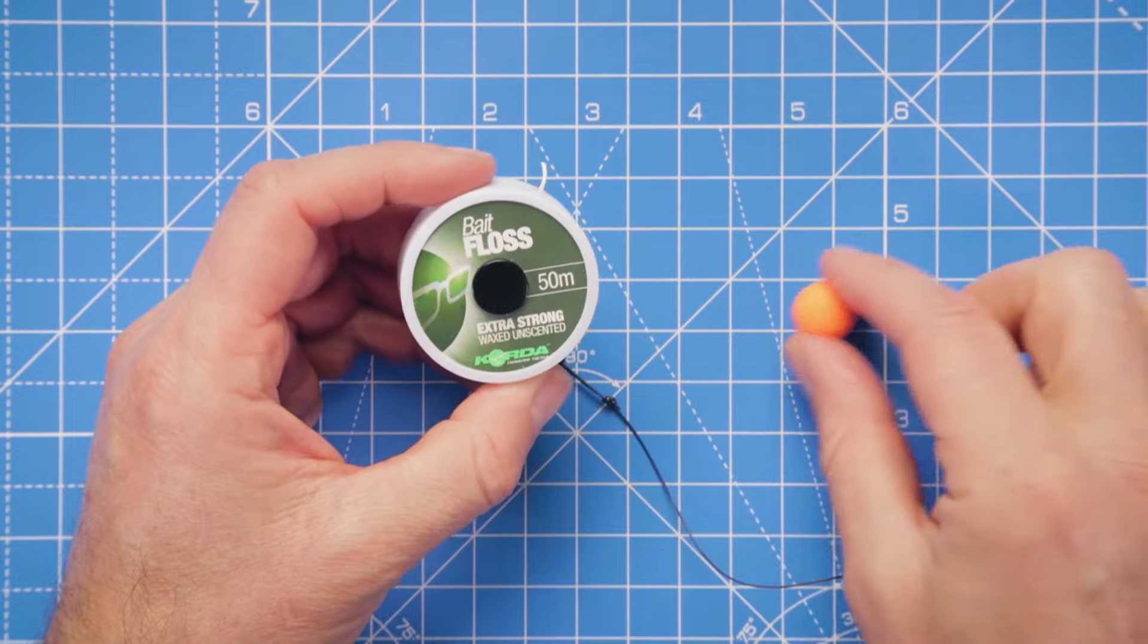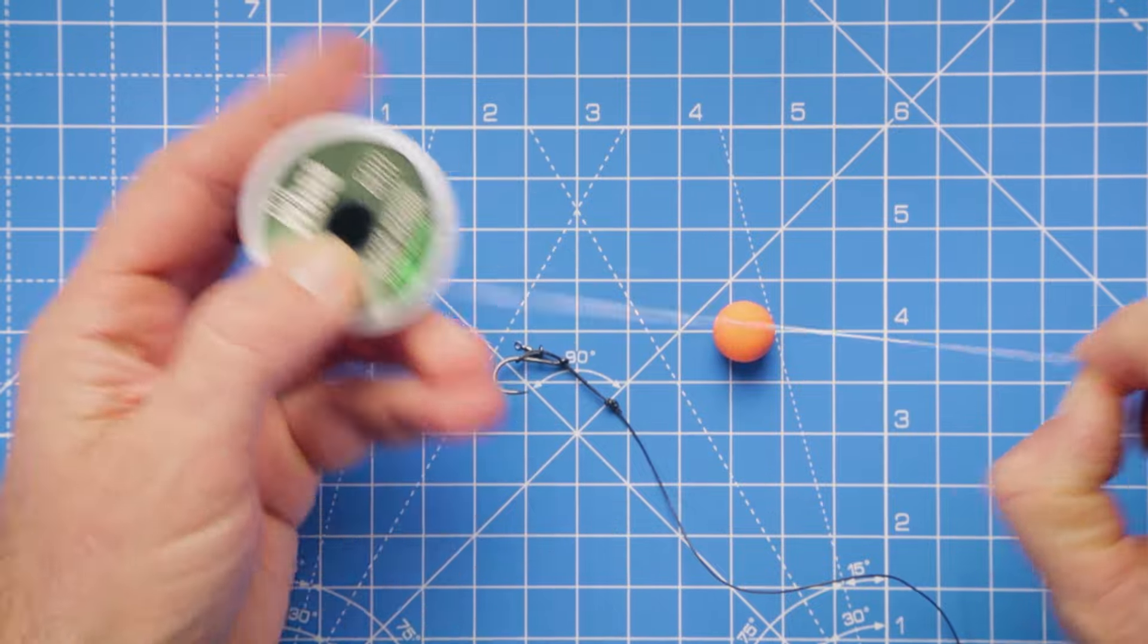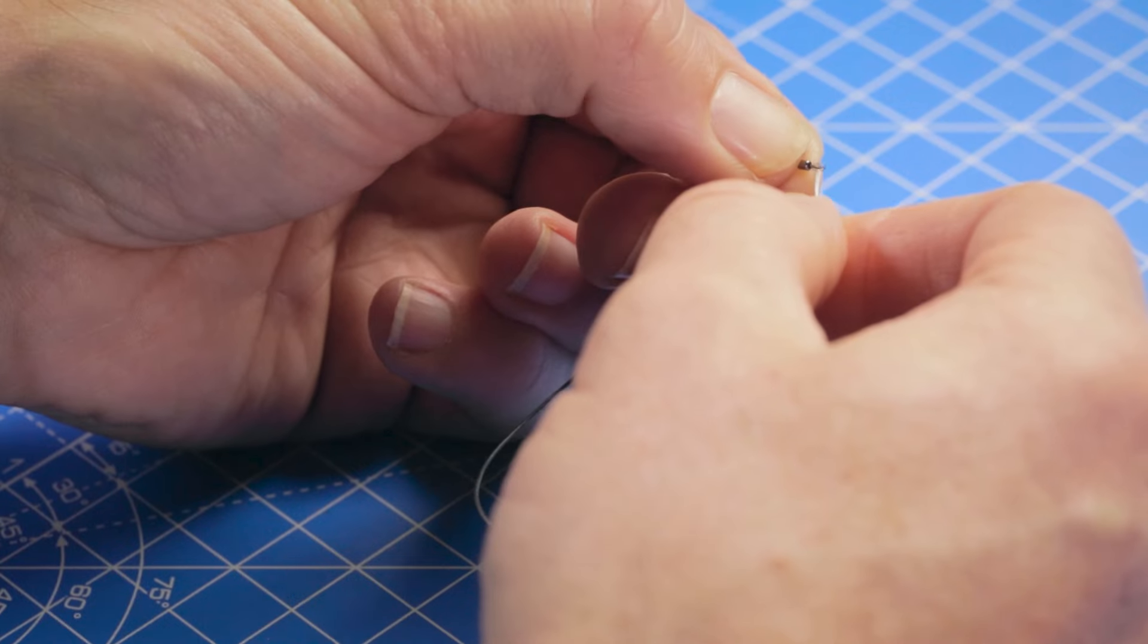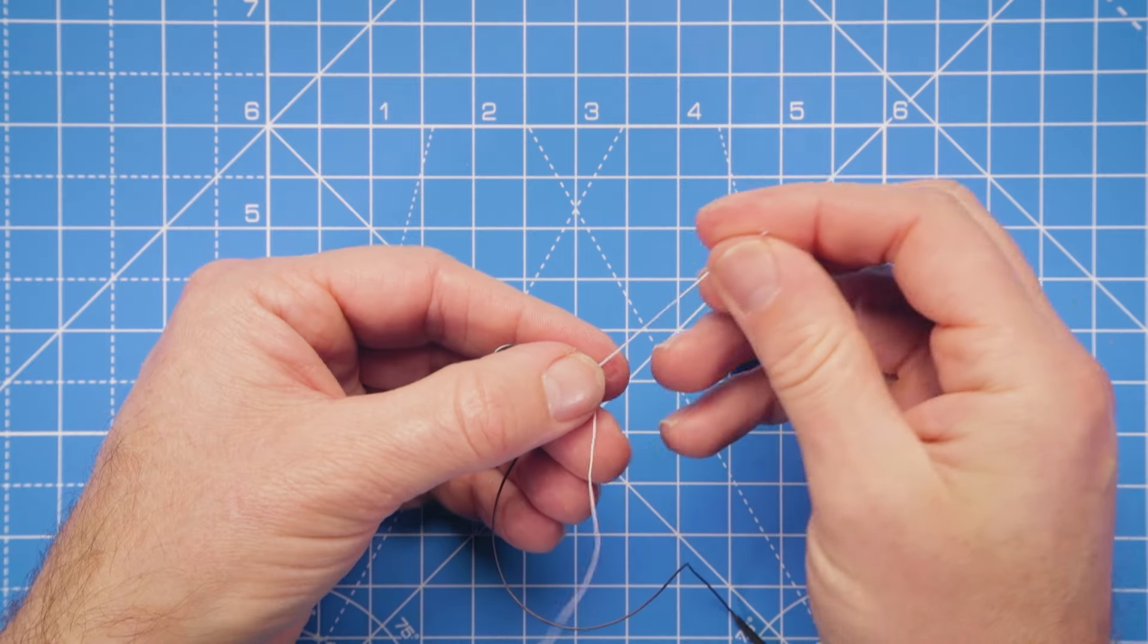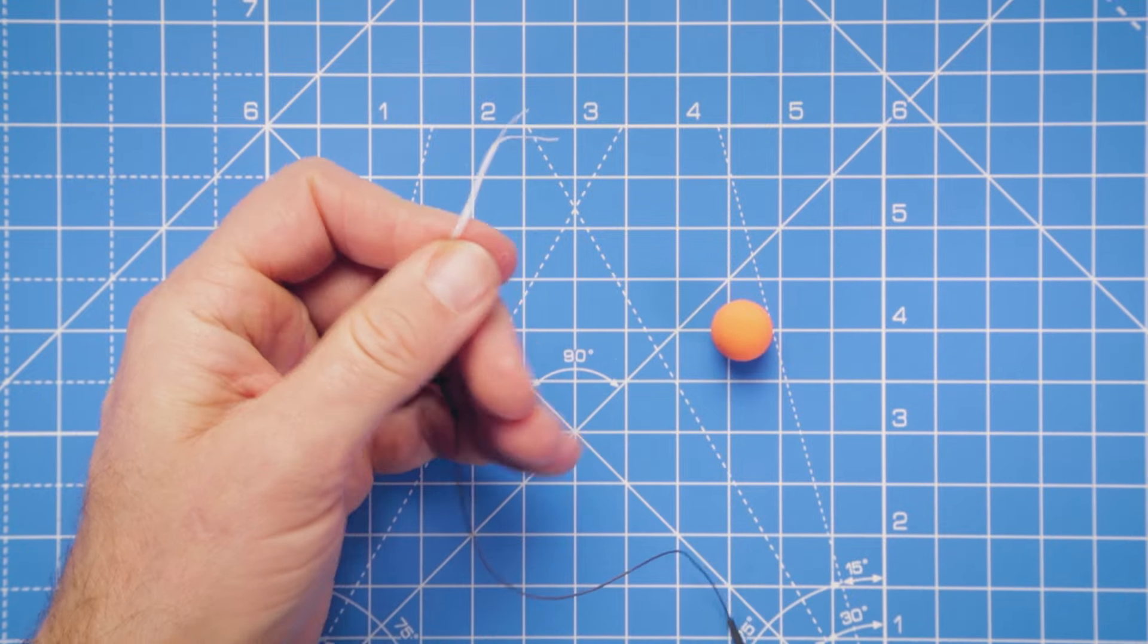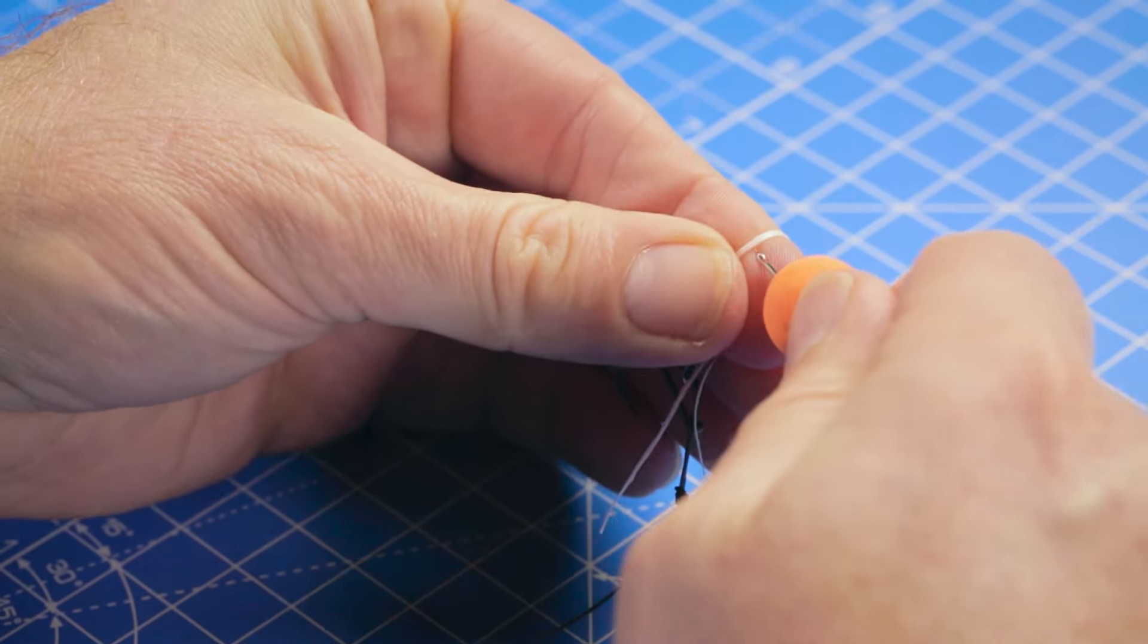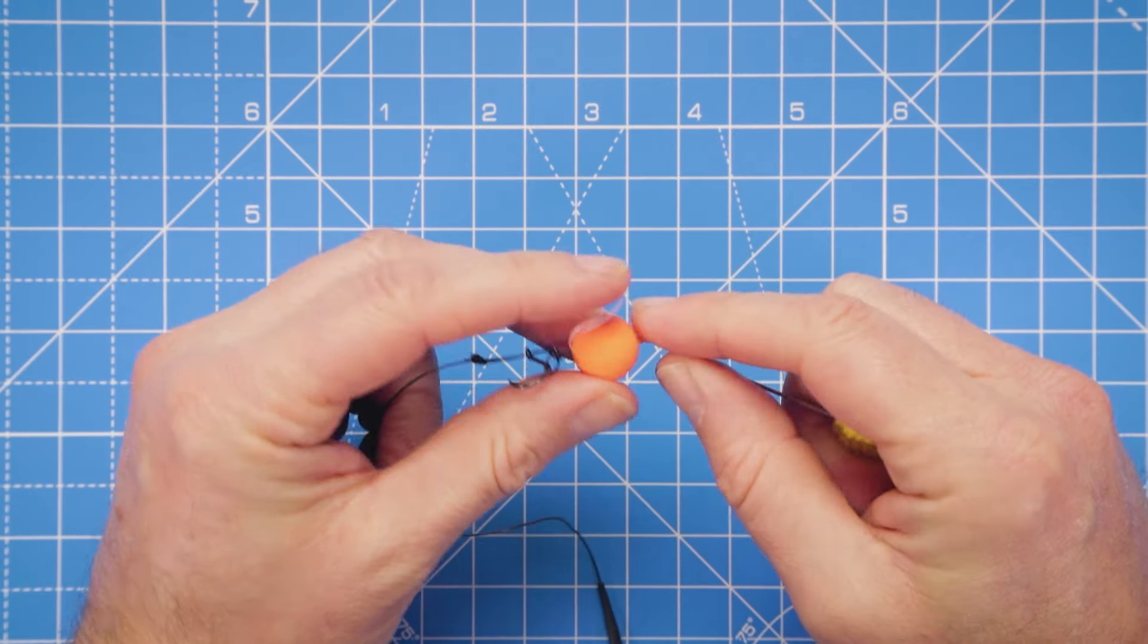So we can now attach our hook bait. Just take a little bit of the dental floss, around about five inches, thread that through the end of that micro ring swivel. There we go, even up both of the tag ends. And then we can take our baiting needle, thread on our hook bait. I just like to then fold that floss over my finger, nice and tight, so that I can then use the needle to pull that through the hook bait.